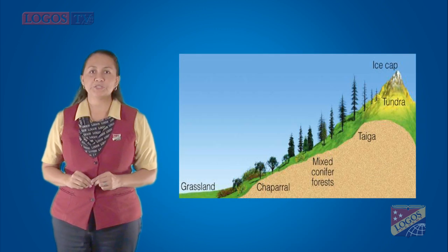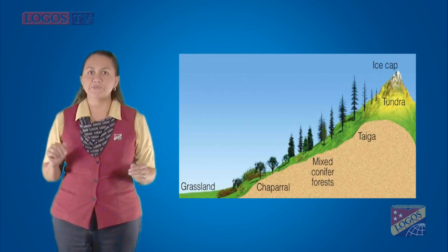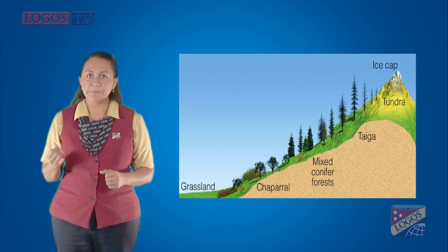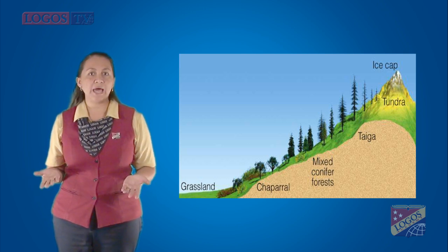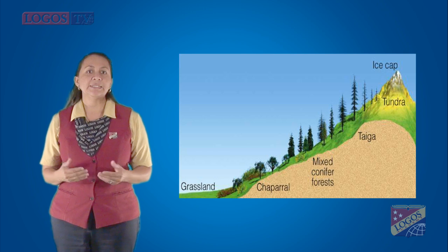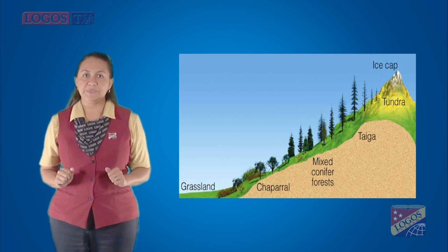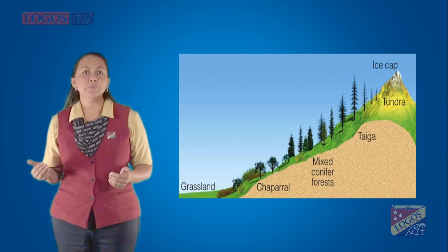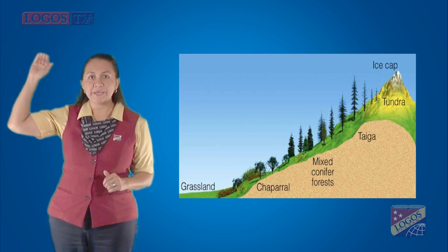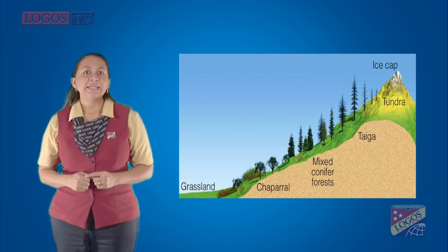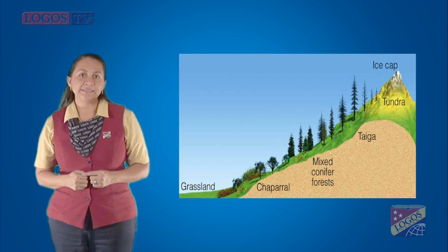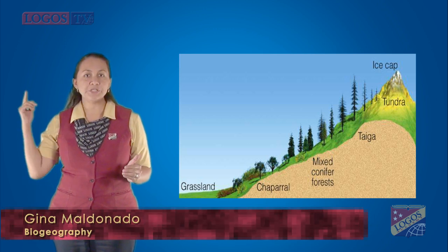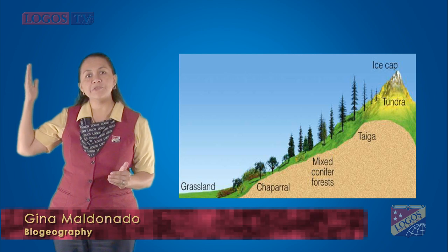Climate is the typical weather pattern in an area over a long period of time. Differences in climate such as temperature, rain, and sunlight can limit the dispersal of species. For example, climate changes dramatically as you move up a tall mountain. The climate determines the distribution of species in the different parts of the mountain.